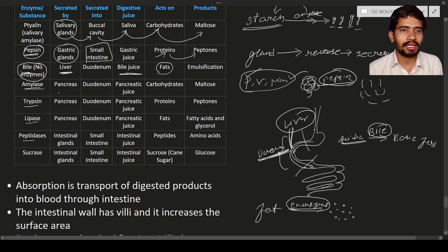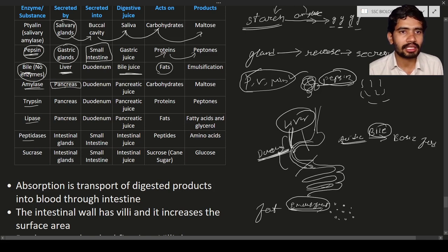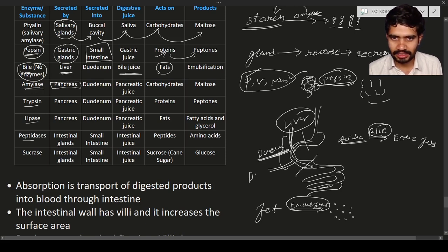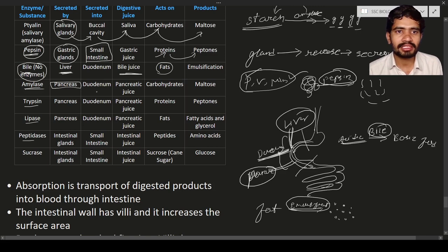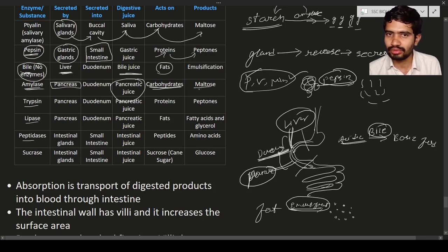Amylase is of two types: salivary amylase and pancreatic amylase. The pancreas produces the amylase enzyme and releases it into the duodenum. The pancreatic amylase acts on carbohydrates and breaks them down into simple sugars like maltose and glucose.